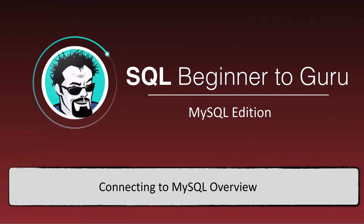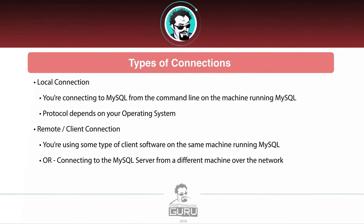In this video we are going to take a closer look at how we connect to MySQL. There are a number of different options I want to talk about more in depth. There are two primary types of connections we'll be dealing with. One is what we call a local connection — you're connecting to MySQL from the command line on the machine that is running MySQL. How it connects is really dependent upon your operating system; there are different options for different operating systems.